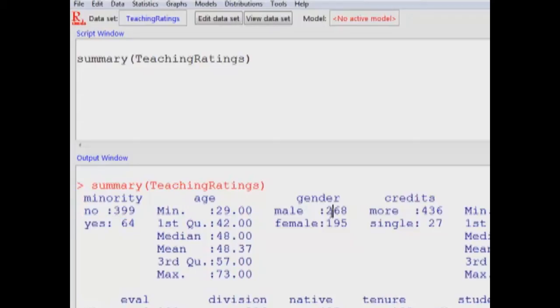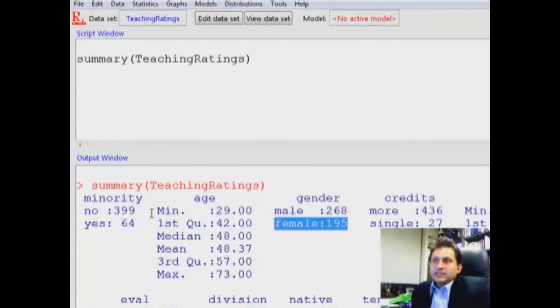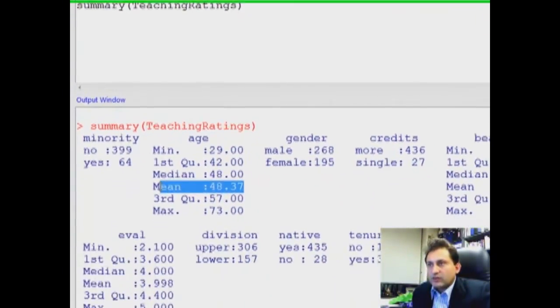Similarly, gender: 268 male, 195 female instructors. On the other hand, if the variable is not categorical, but instead a continuous variable, such as age, then we get the minimum age, which is 29 years, and the maximum is 73 years old, and the average age is 48.37.